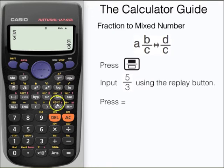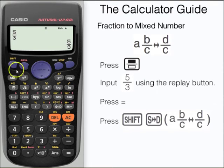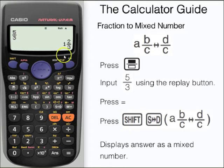We're going to change the improper fraction to a mixed number using this function here. To access this we need to press the shift button and then the SD button. And here we have our mixed number, 1 and 2 thirds.